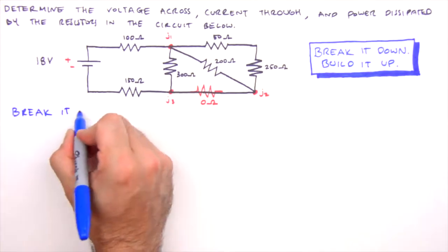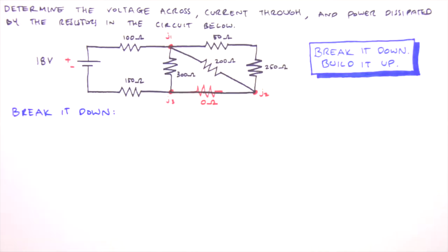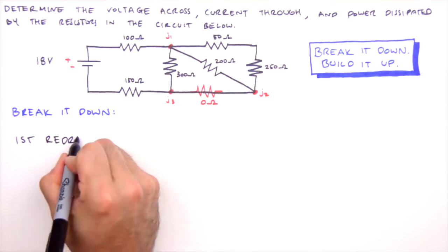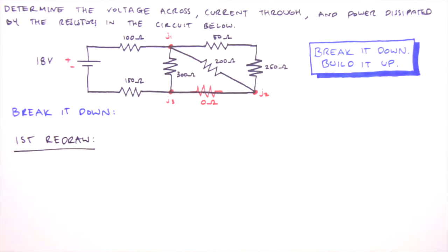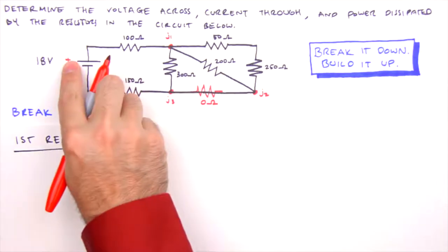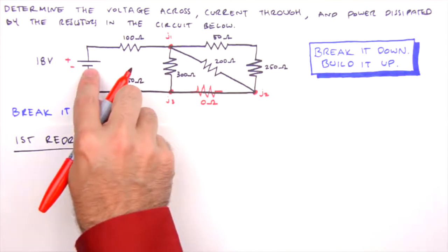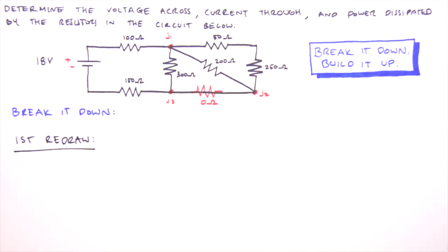Okay, let's break it down now. We'll start by redrawing the circuit so that series and parallel relationships are readily apparent. We'll write first redraw, because there will be quite a few. The basic idea for our first redraw is to convert our circuit diagram, which has kind of this loopy current path, clockwise from positive to negative, into a unidirectional one, left to right.